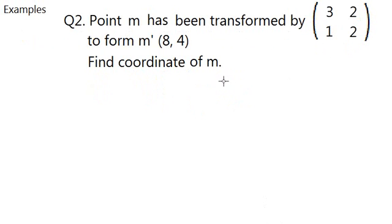And so now comes question 2, where I combine basically all the things. Point M has been transformed by the matrix 3, 2, 1, 2, to form M dash 8, 4 coordinate. So now you have to find the coordinate of M. So what you need to do, again, is to make an equation, but how?